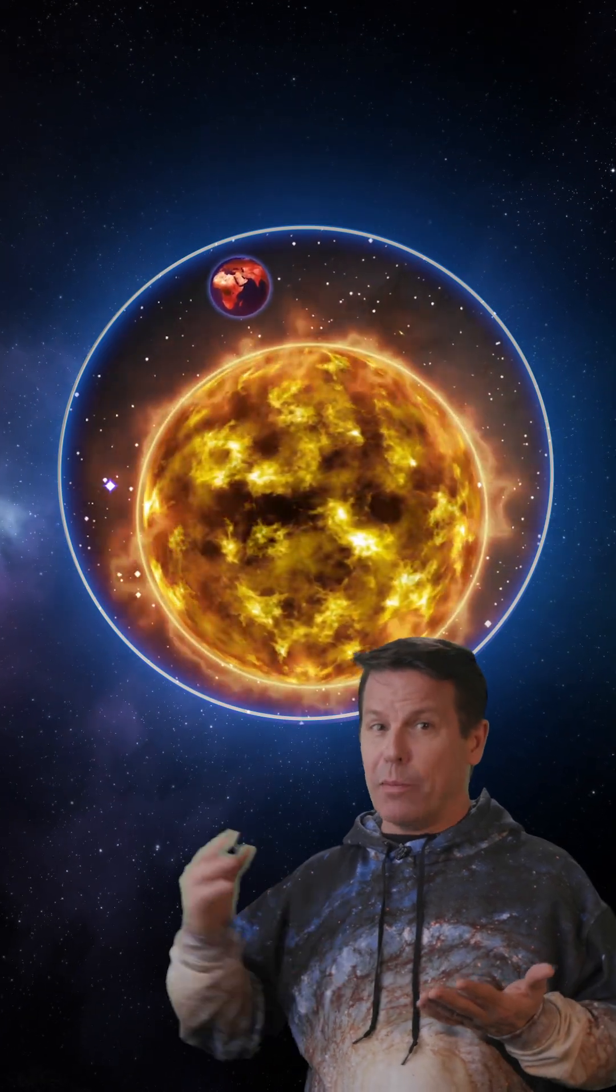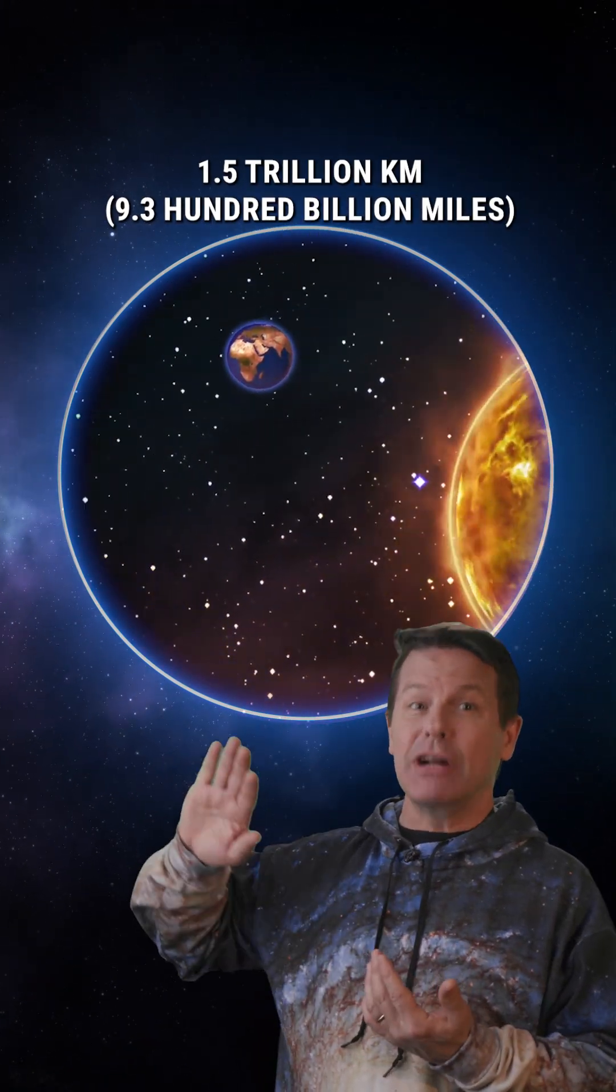If Earth was orbiting UY Scuti instead of the Sun, we would have to be one and a half trillion kilometers away from it just to keep from burning to a crisp.